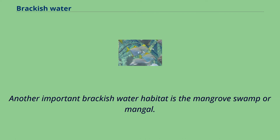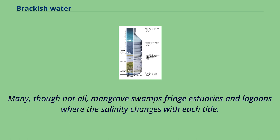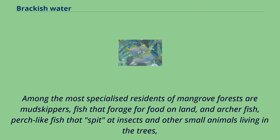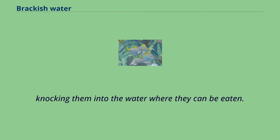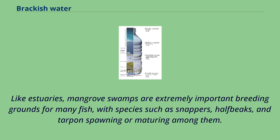Another important brackish water habitat is the mangrove swamp. Many, though not all, mangrove swamps fringe estuaries and lagoons where the salinity changes with each tide. Among the most specialized residents of mangrove forests are mudskippers, fish that forage for food on land, and archer fish, perch-like fish that spit at insects and other small animals living in the trees, knocking them into the water where they can be eaten. Like estuaries, mangrove swamps are extremely important breeding grounds for many fish, with species such as snappers, half-beaks, and tarpons spawning or maturing among them.